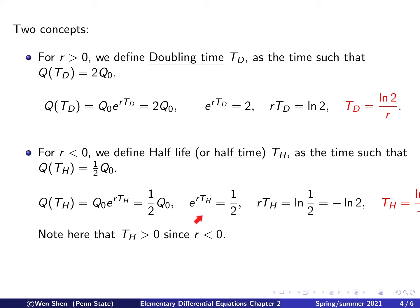And then I can take natural log on both sides of this equation. I'll get rTH is ln of 1 over 2, which is also negative ln of 2. Okay. And then I can find, move the r to the other side. I find the expression for TH, which is negative ln of 2 over r, and this is the half time.